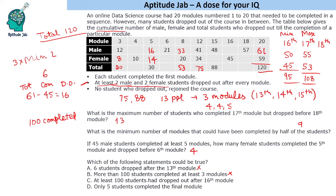Statement three: at least 100 students dropped out after the 16th module. The female value at the 16th is fixed at 45. For males, the 18th module shows 57, and with at least two dropping per module, the maximum we can place at the 16th is 53. So the maximum total by the 16th is 98 — not 100. This statement is false.